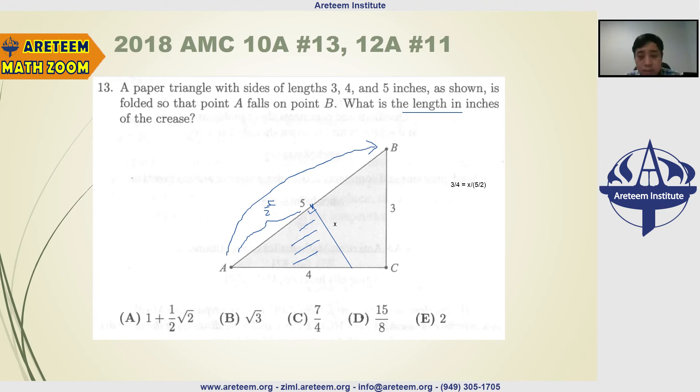So in this case, what is X? X is going to be 3 over 4 times 5 over 2, 5 over 2. So the answer is 15 over 8. So the answer is B.